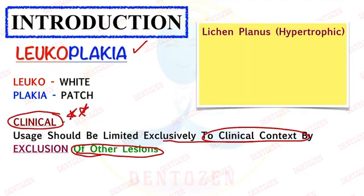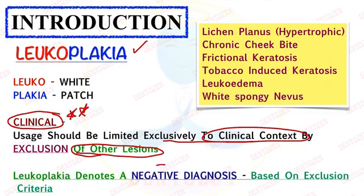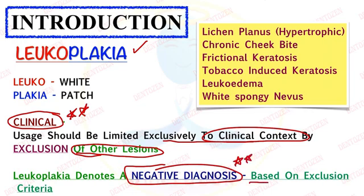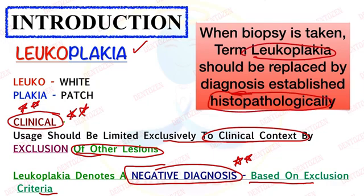Other lesions which should be excluded are lichen planus, chronic cheek bite, frictional keratosis, tobacco-induced keratosis, leukoedema, and white spongy nevus. Leukoplakia denotes a negative diagnosis — another important point — because its diagnosis is based on exclusion criteria. When we exclude all other diseases, we give the leukoplakia diagnosis, and that too only clinically. When this white patch is then biopsied, the term leukoplakia should be replaced with the diagnosis established histopathologically, which becomes the final diagnosis.